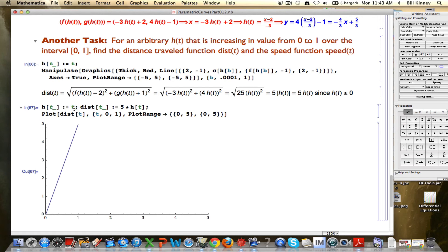In general, what do you do for a general t squared? Or a general function for h of t, like t squared? What are you going to get? You're going to get, in general, a nonlinear distance traveled function.